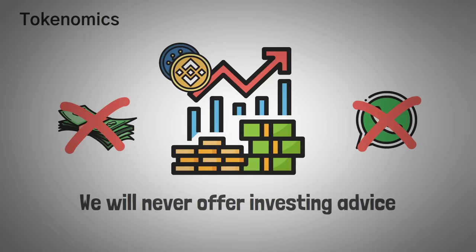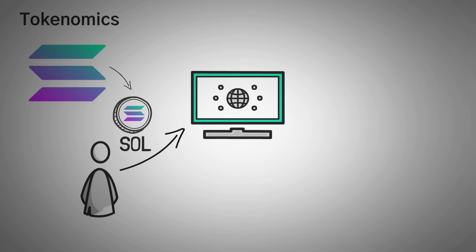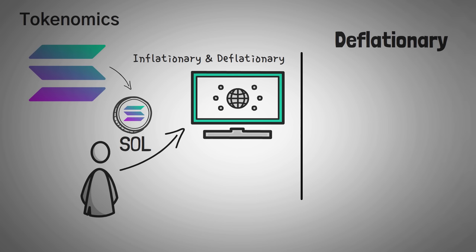So the coin on the Solana network is the Sol coin, and it is used for transaction fees and used all over the blockchain ecosystem. From as far as I can tell, Solana is both inflationary and deflationary.